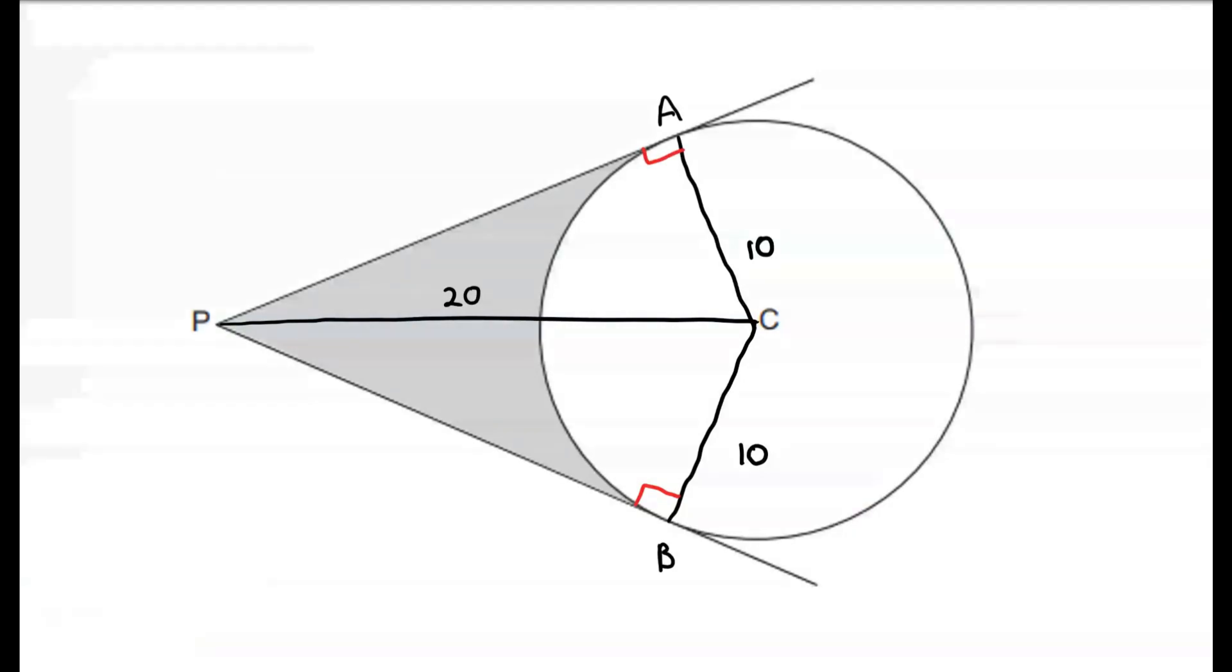In order to find the area of the shaded region, we're going to find the area of the quadrilateral PACB. And from this, we're going to subtract the area of the sector of the circle, which has endpoints A and B, as I've shown on the diagram here.